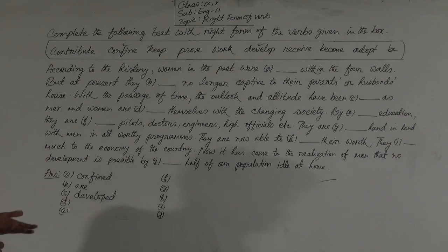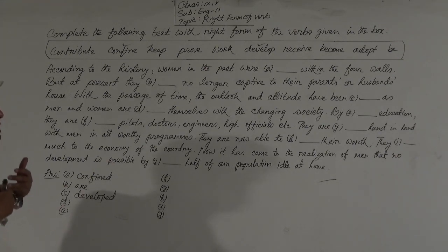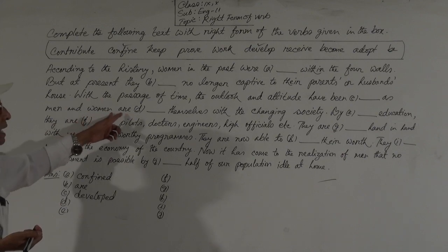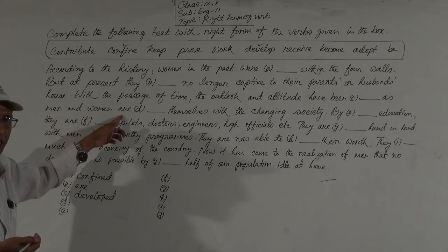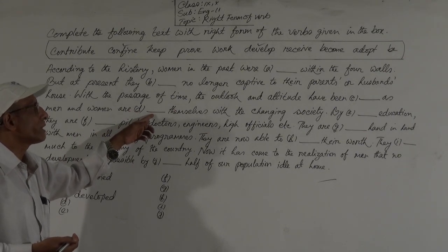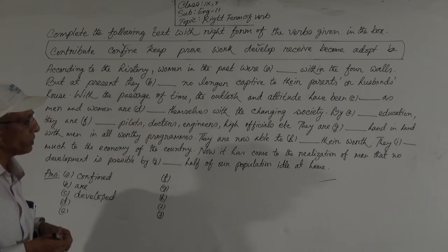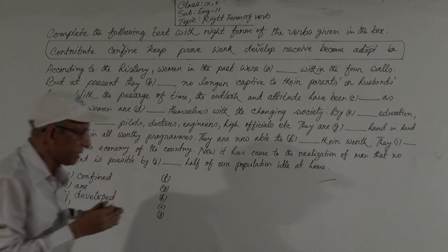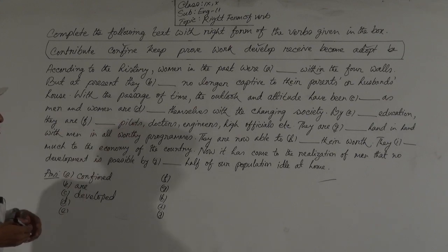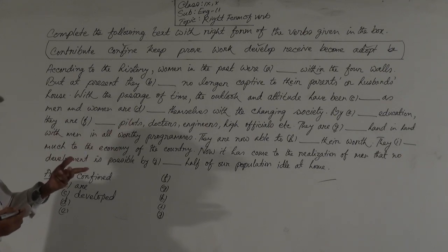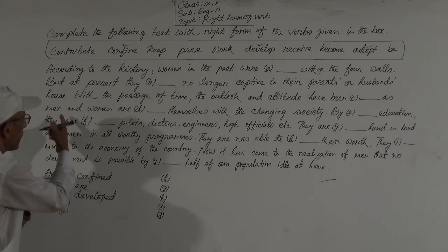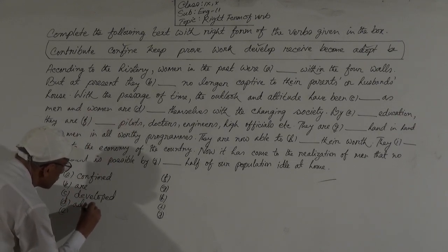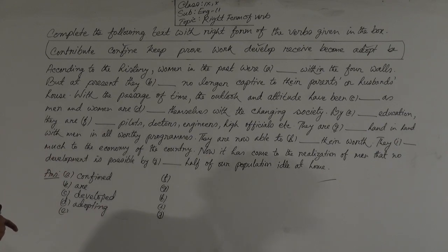So, with the passage of time, the outlook and attitude have been developed. As men and women are dashing themselves with the changing society — this is present continuous tense. After the subject, there is a be-verb, so the verb will be in -ing form. There is a verb 'adopt' in the box, so it will be 'adopting.' Gap D: they are adopting themselves with the changing society.